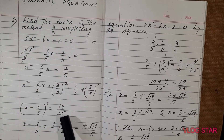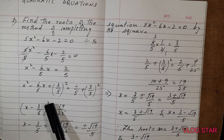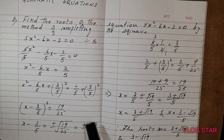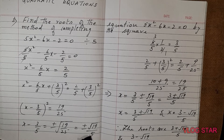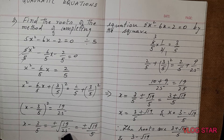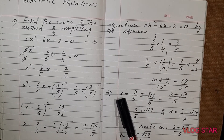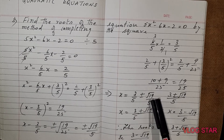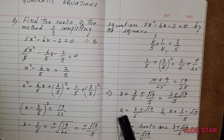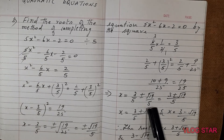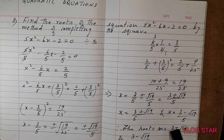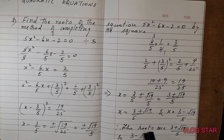So x - 3/5 whole square = 19/25. Therefore x - 3/5 = ±√(19/25), which equals ±√19 divided by √25. Since √25 = 5, we get x - 3/5 = ±√19/5. So x = 3/5 ± √19/5, which gives x = (3 ± √19)/5. Therefore the roots are (3 + √19)/5 and (3 - √19)/5.